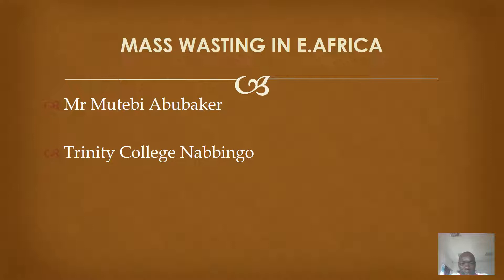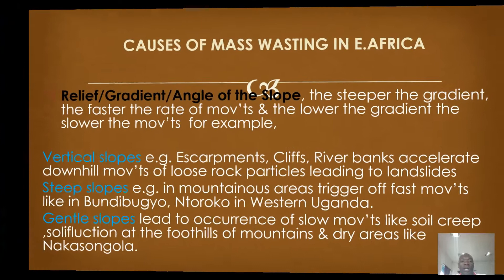This is Motebe presenting physical geography in East Africa about the causes of mass wasting in East Africa. This is a continuation of the types which I presented the other time.